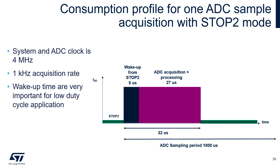Looking at the consumption profile for one ADC sample acquisition: when STM32L5 is in STOP2, the consumption is just a few microamps. When it wakes up and the core starts executing at 4 MHz, the consumption is at hundreds of microamps, so it is very important that the active phase is as short as possible. Waking up from STOP2 takes approximately 5 microseconds. Starting the ADC acquisition, storing the value, and clearing the wake-up flags takes less than 30 microseconds. The rest of the 1 ms window — the acquisition rate — can be spent in STOP2. To achieve low power consumption, it is necessary to have a low duty cycle between the active and inactive phase, making a short wake-up time absolutely essential.